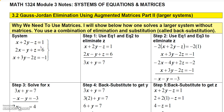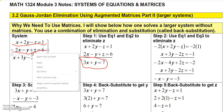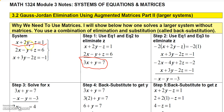What you can do is try to eliminate a variable using the elimination method. If we take the first equation and add it to the second equation, notice that the z's are opposites and will cancel. Adding those together: x plus 2x is 3x, 2y plus negative y is y, the z's cancel, and 1 plus 6 is 7. So now we get an equation in only two variables, x and y.